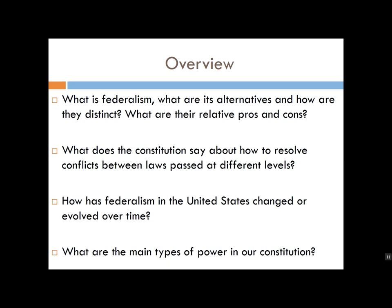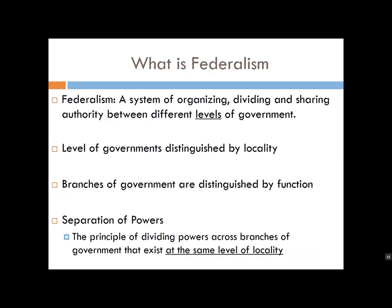Today we're going to cover each of the following points: What is federalism? What are its main alternatives and how are they distinct? What are their relative pros and cons? What does the Constitution say about how to resolve conflicts between laws passed at different levels of government? How has federalism in the United States changed or evolved over time? There are two major historical trends you'll want to pay attention to. Finally, what are the main types of power created by our Constitution and our constitutional system of federalism?